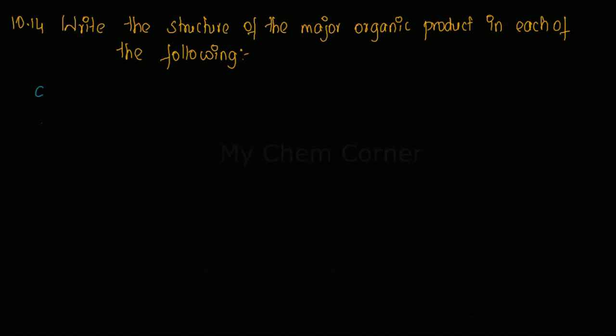Next is question number C. The question is: CH3-CH(Br)-CH2-CH3. This compound is treated with NaOH, and on the arrow we have a water molecule.